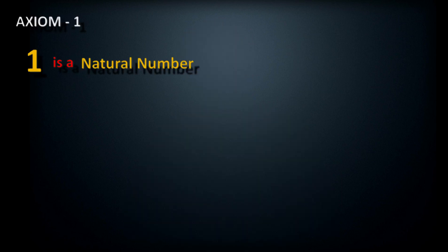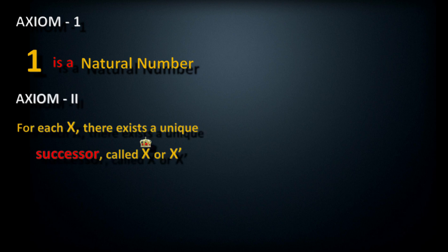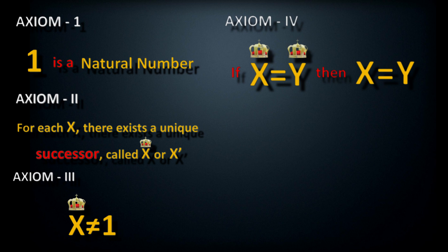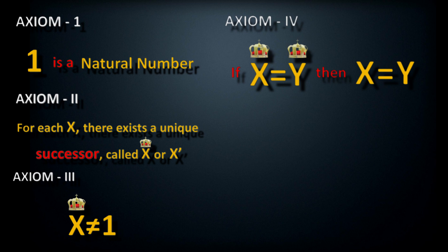Now let's look at these axioms once again. Axiom 1 states that 1 is a natural number. Axiom 2 states that for every x there exists a unique successor, denoted by x prime. Axiom 3 states that there is no natural number whose successor is 1. Axiom 4 states that if x prime equals y prime, then x equals y. And the axiom of induction states that given a set M of natural numbers where 1 is in the set and the successor of x is in M whenever x is, then M contains all natural numbers. I want you to write these down and place them somewhere you can see them every day — internalize them.